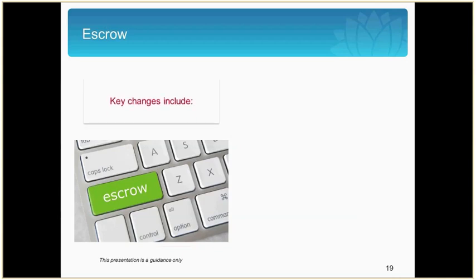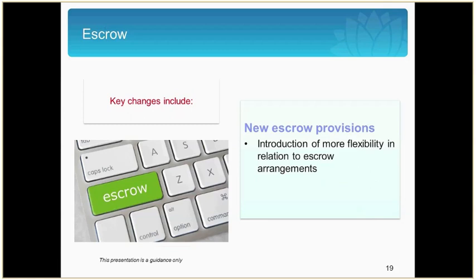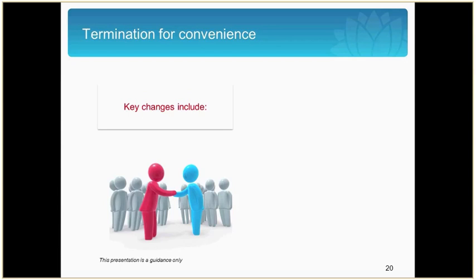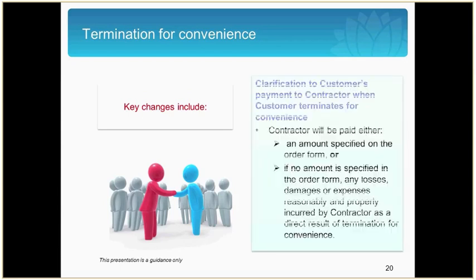With regards to escrow, there are now new escrow provisions which include the ability to agree on alternative escrow arrangements, and this change was made to give the customer and the contractor more flexibility. In terms of termination for convenience, ProcureIT version 3.2 now clarifies that the contractor will either be paid an amount specified in the order form, or if no amount is specified, any losses, damages or expenses which are reasonably and properly incurred by the contractor as a direct result of the termination. Previously, ProcureIT was worded in a way which could have been interpreted as entitling the contractor to double-dip on payments.